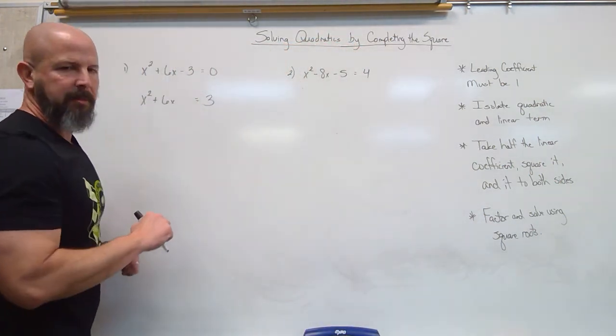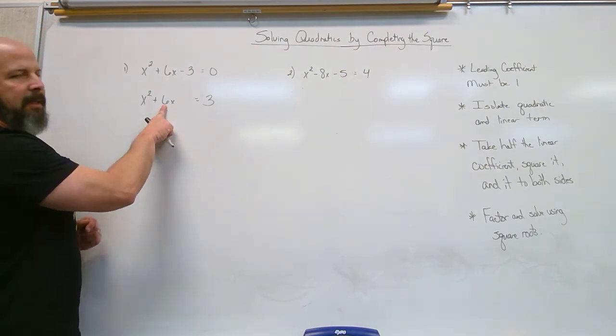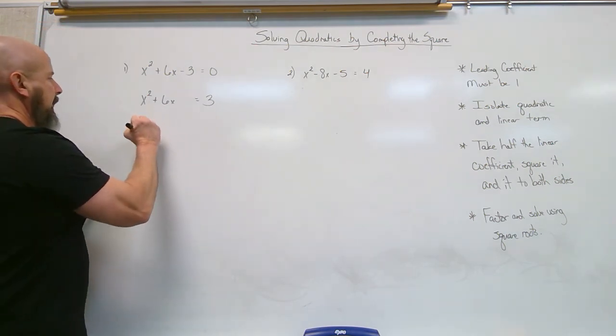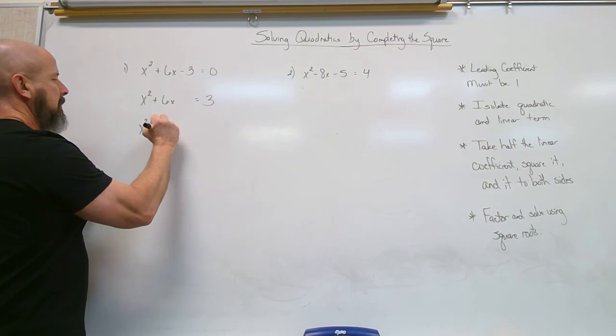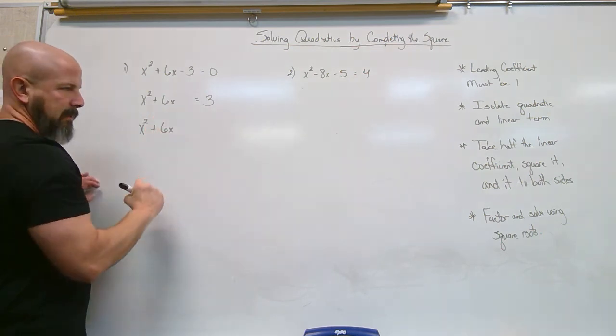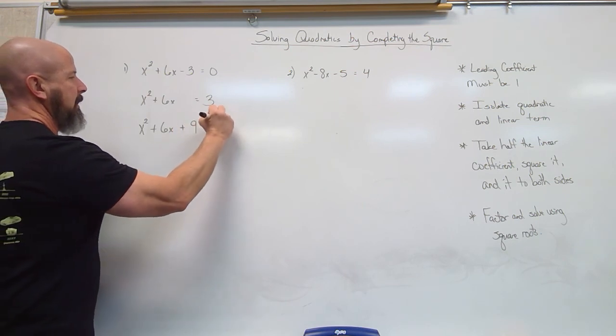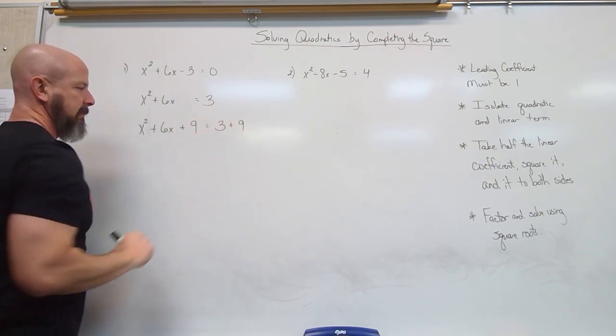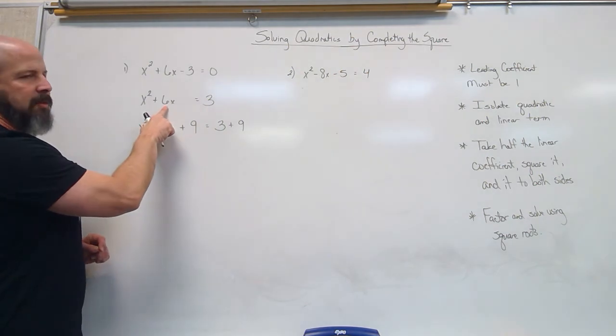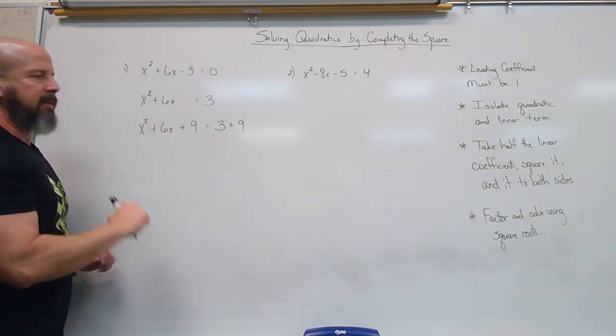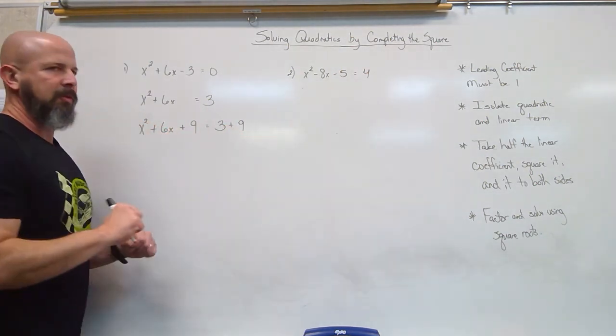So my linear coefficient back at number 1 is 6. If I take half of 6, I get 3. Then I'm going to add 3 squared, which is 9, to both sides. So half of 6 is 3. 3 squared is 9. I'm adding 9 to both sides.